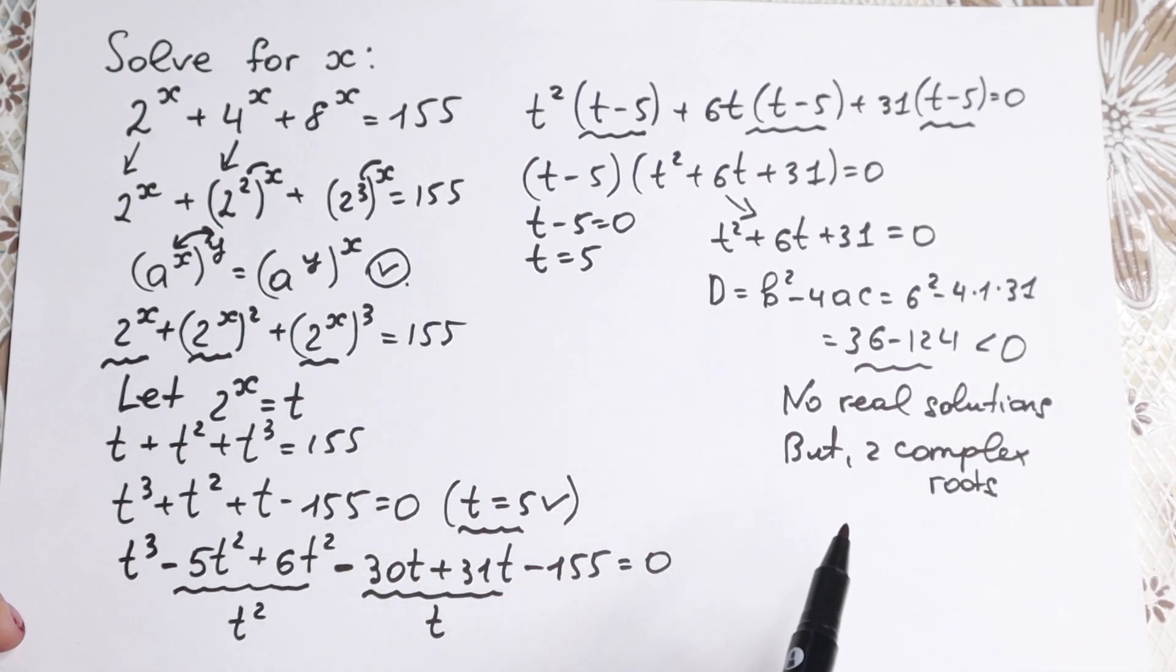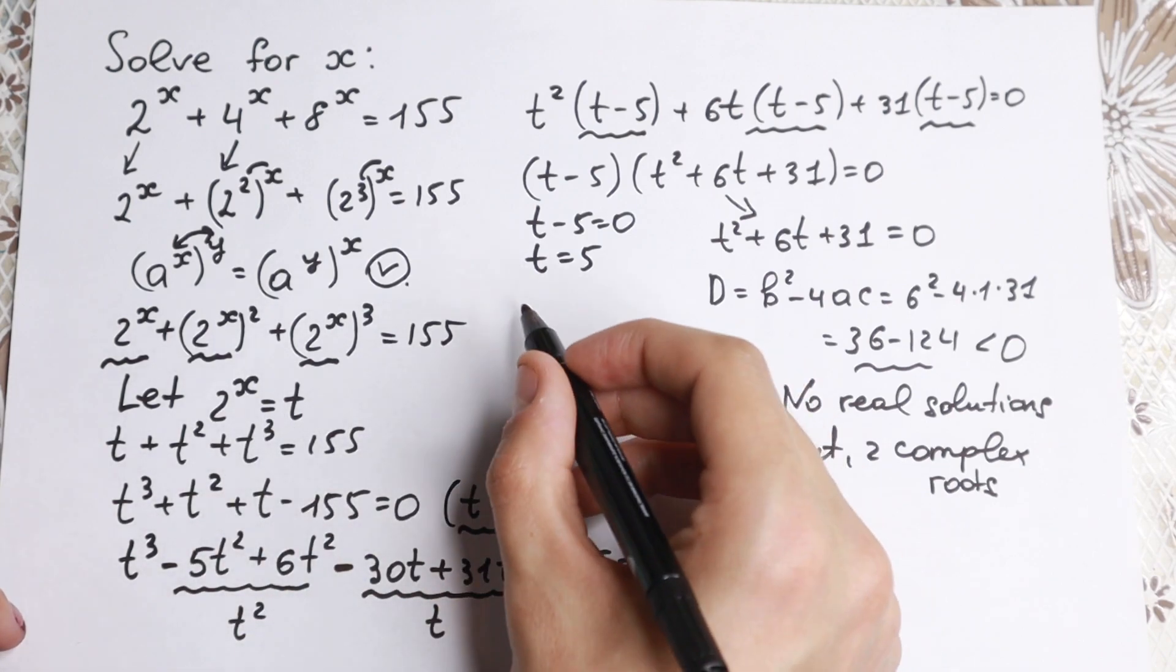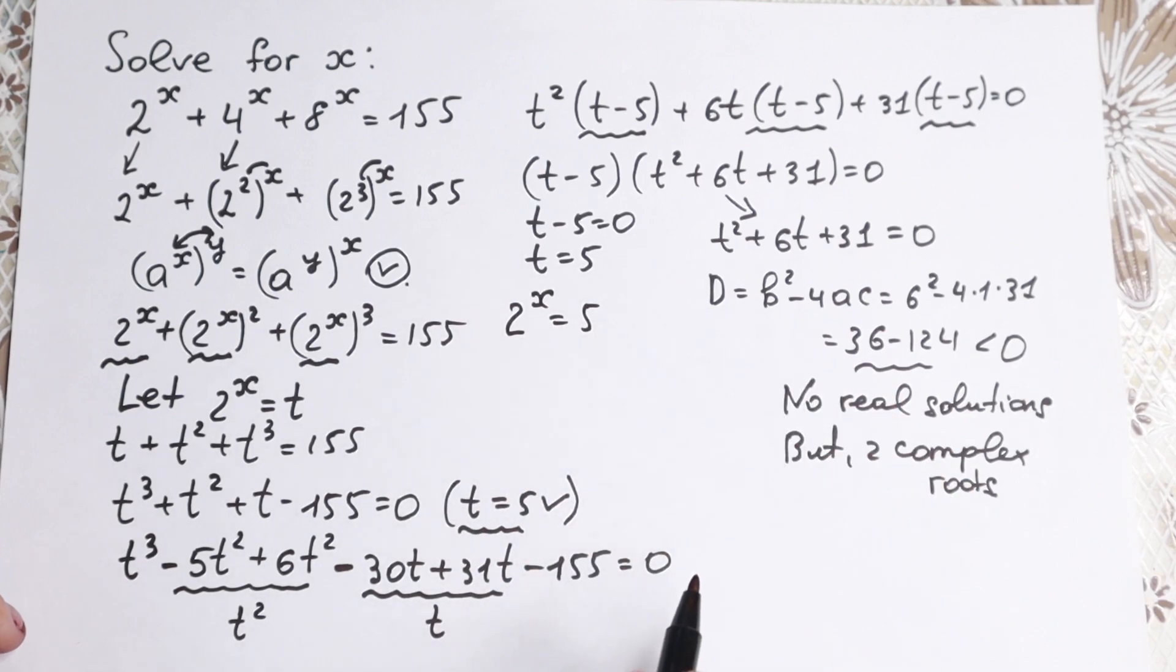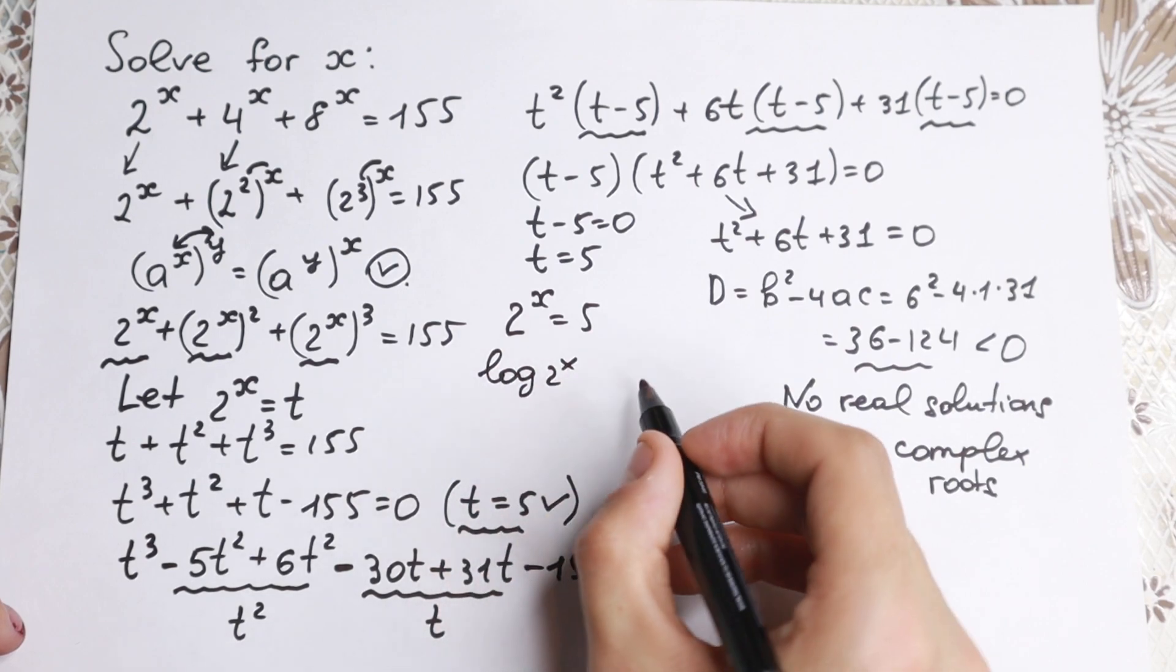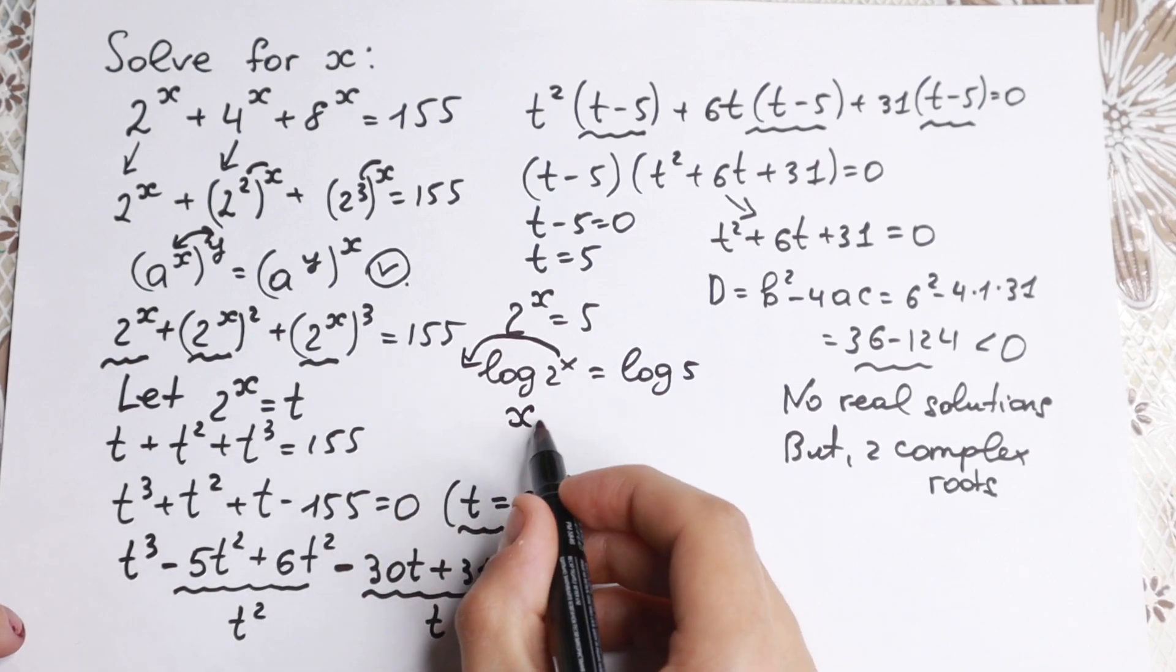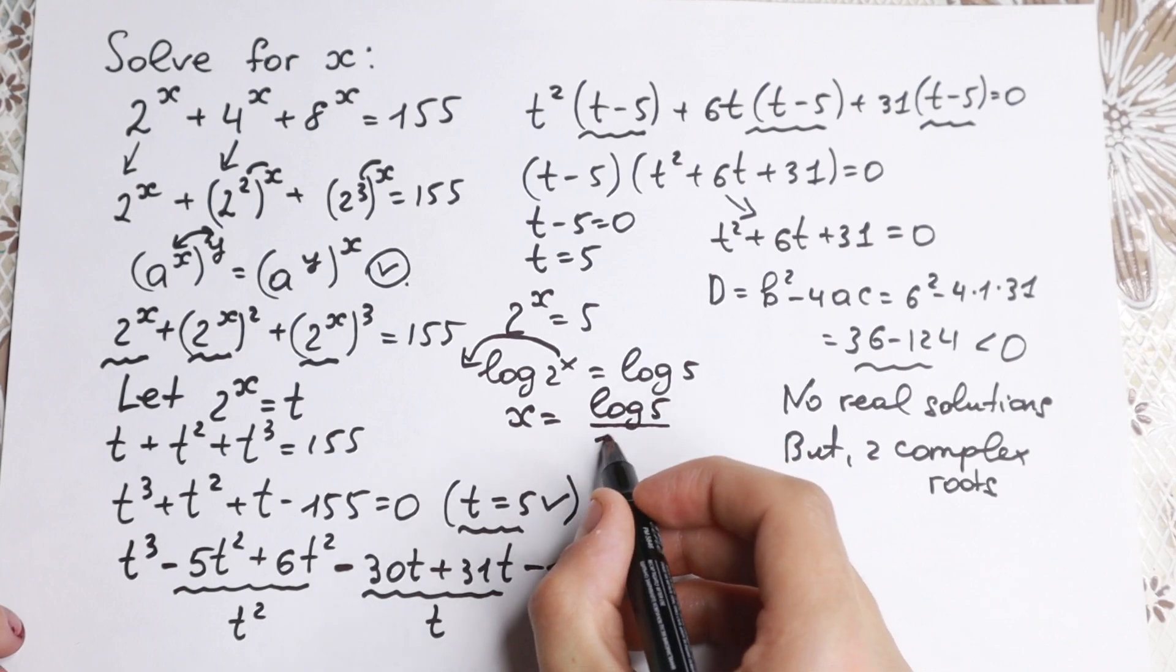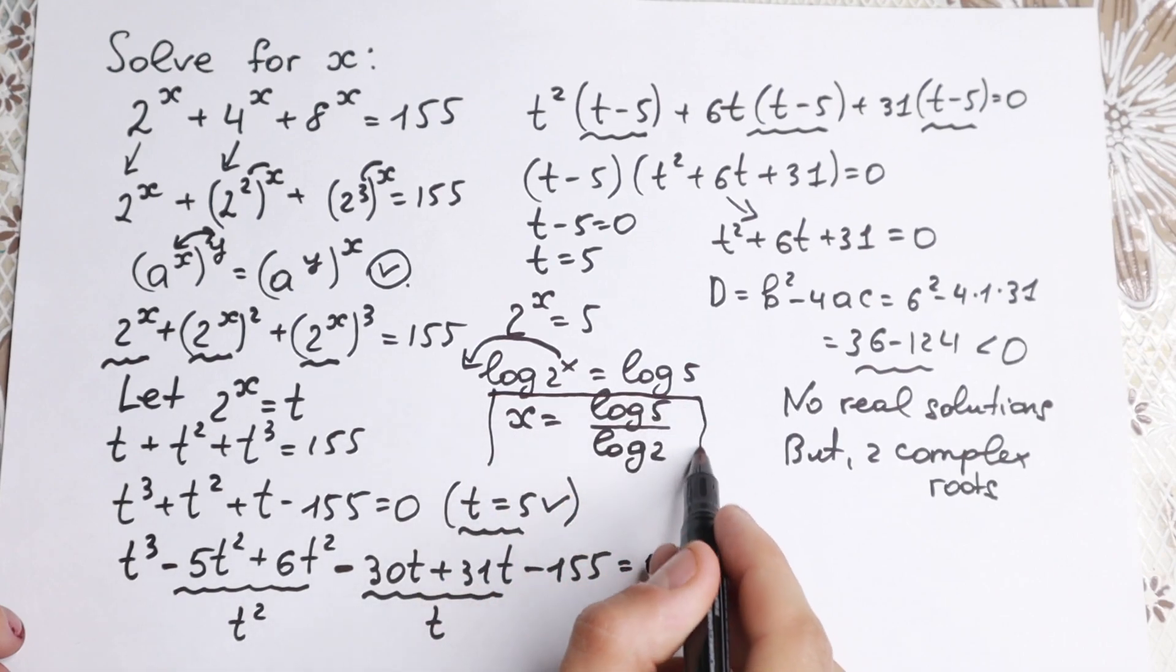Let's go right here. We have t equal to 5. This is real number so we'll have a real number root. But t equal to 2 to the x. So we need to write 2 to the x equal to 5. How can I solve this equation? Of course using logarithm. If you take log from both sides we have log 2 to the x equal to log 5. Knowing log property, this x jumps right here. So we have x equal to log 5 over log 2. This is our one and only root if we are talking about real numbers.